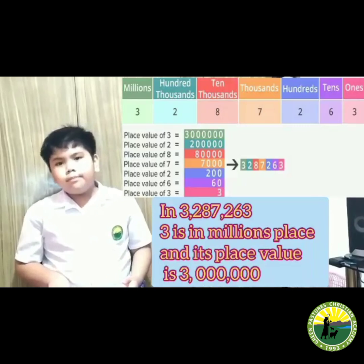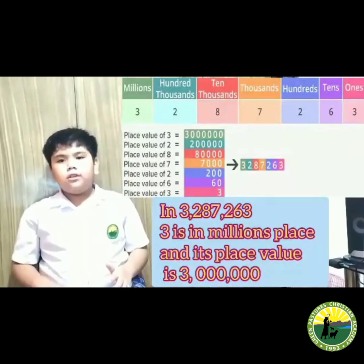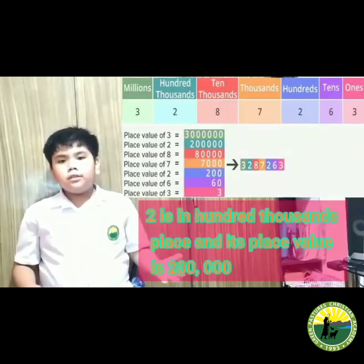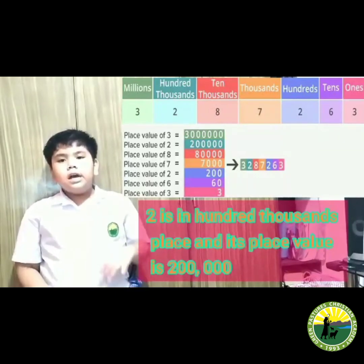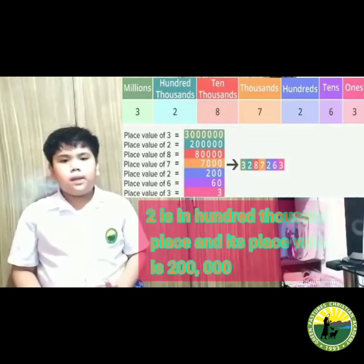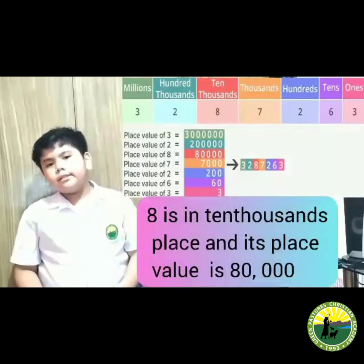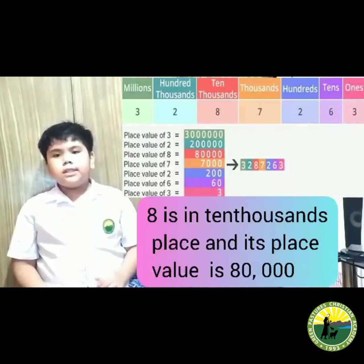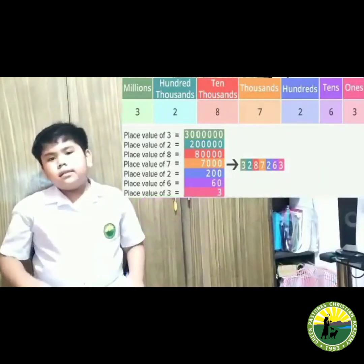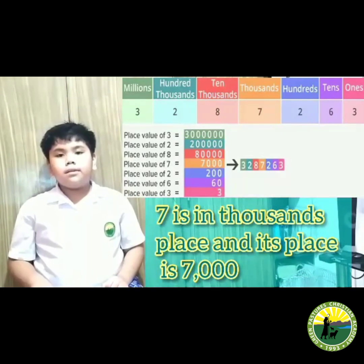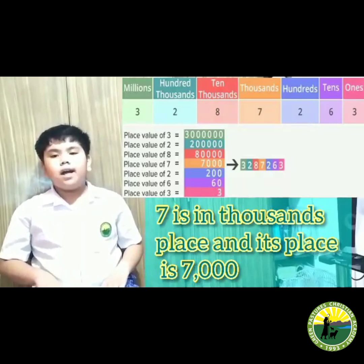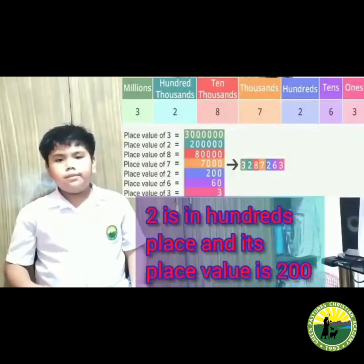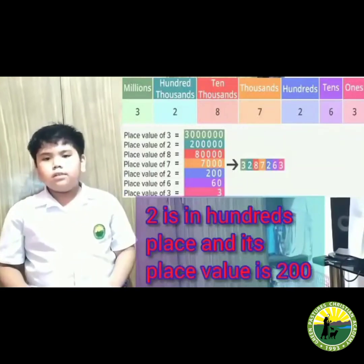3 is in the millions place and its value is 3,000,000. 2 is in the hundred thousands place and its value is 200,000. 8 is in the ten thousands place and its value is 80,000. 7 is in the thousands place and its value is 7,000. 2 is in the hundreds place and its value is 200.